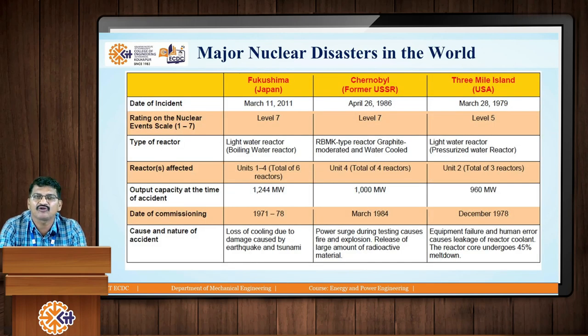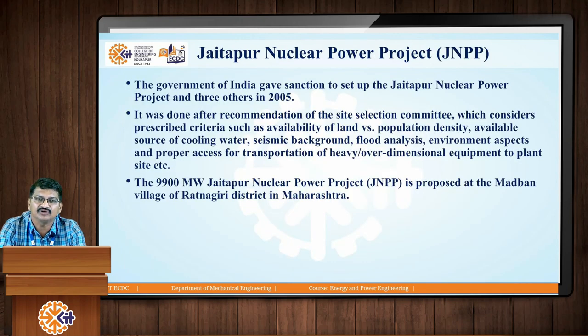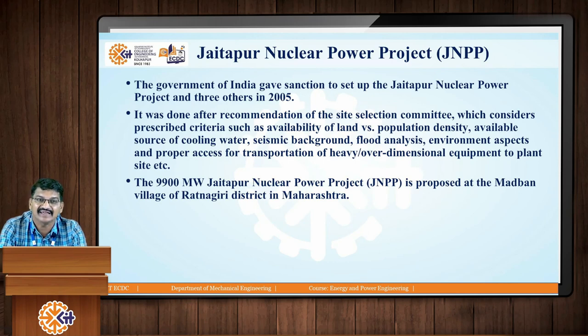A major concern is why society is not accepting nuclear power plants — disasters like Chernobyl and Fukushima are the reason. Jaitapur is one nuclear power plant we are trying to introduce in India, with a capacity of about 9,900 to 10,000 megawatt. Compared to the Koyna power plant which generates about 2,000 megawatt, Jaitapur generates 10,000 megawatt in much less area. But society is not accepting this power plant due to disasters which happened in other countries.